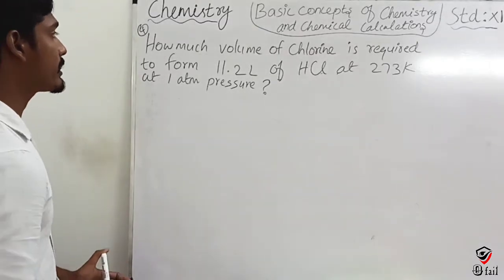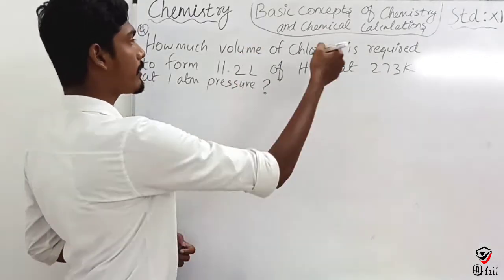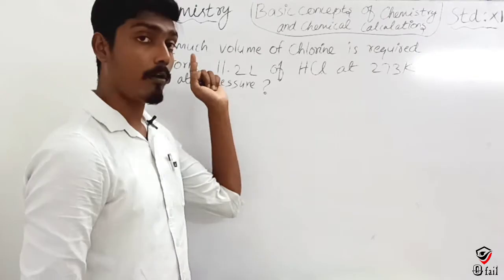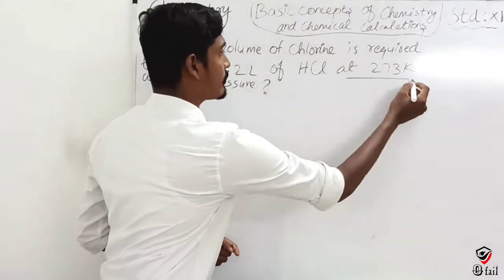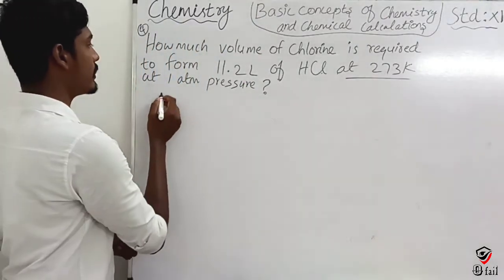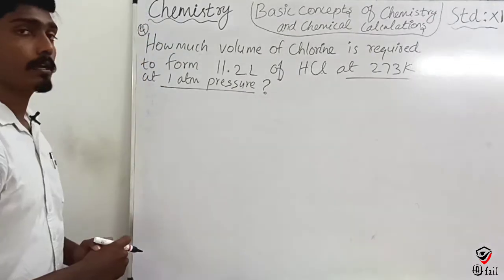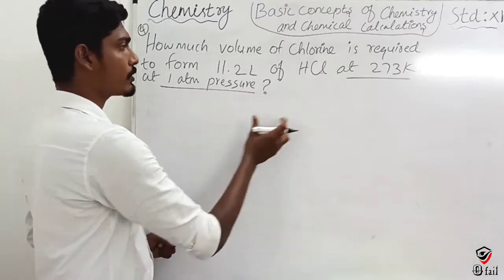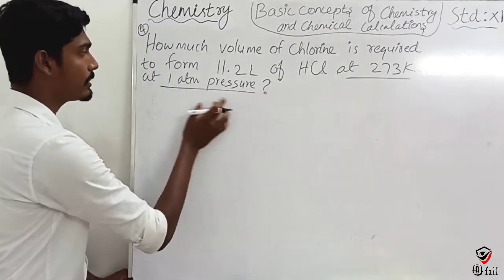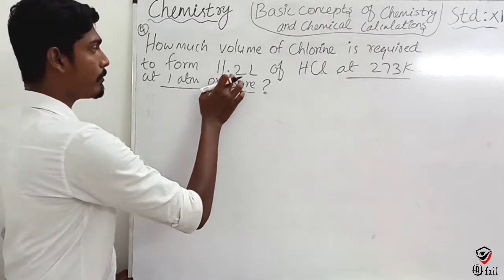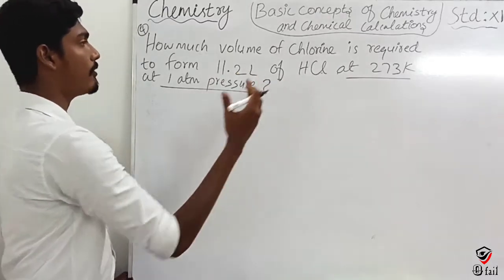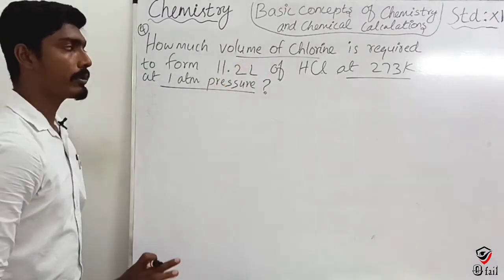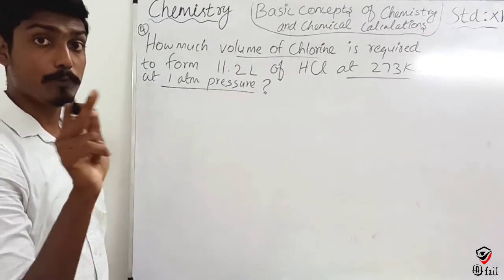The question is: how much volume of chlorine is required to form 11.2 liters of HCl at 273 Kelvin temperature and 1 atmospheric pressure? So this is the problem — 11.2 liters of HCl at 273 Kelvin temperature and 1 bar pressure.